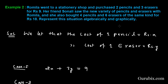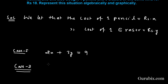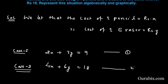For the second condition, four pencils and six erasers are bought for rupees 18. We write: 4X + 6Y = 18. These are the two linear equations in two variables, and this is the algebraic representation of both conditions.